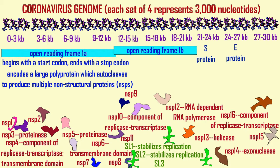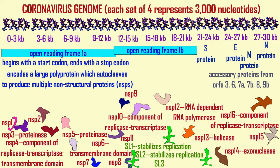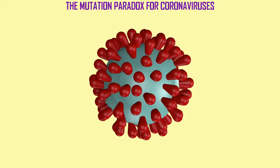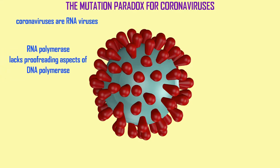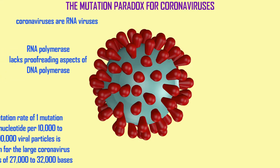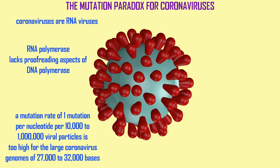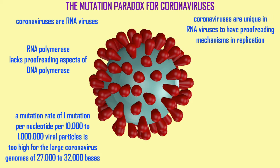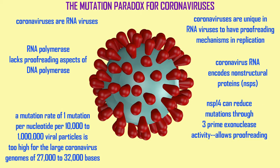Some NSPs have a transmembrane domain and can cross the membrane of the endoplasmic reticulum or Golgi. Some have an editing capability, which is why the coronavirus genome, being a single-stranded RNA, can be so long — they can proofread, as opposed to most RNA viruses. This would be NSP14.